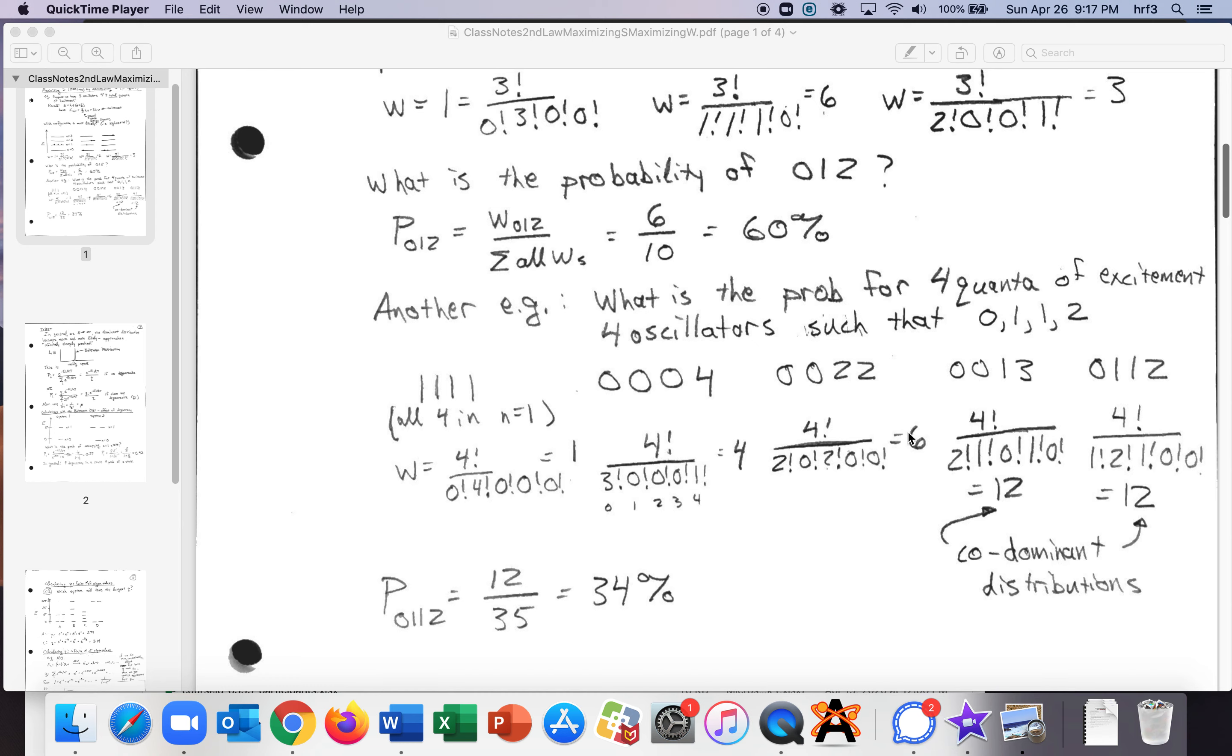Well if you look at all the possibilities you could have all four of them in the first excited you could have 0 0 0 4 you could have 0 0 2 2 you could have 0 0 1 3 or 0 1 1 2 that's the one that we're interested in. You go through and calculate the w's they all have 4 factorial in the numerator and then this one has 4 factorial in the denominator because all four of them are in the same and etc you get the idea. You do those calculations you got one way you can do this four ways you can do that six ways you can do that twelve ways you can do that twelve ways you can do that.